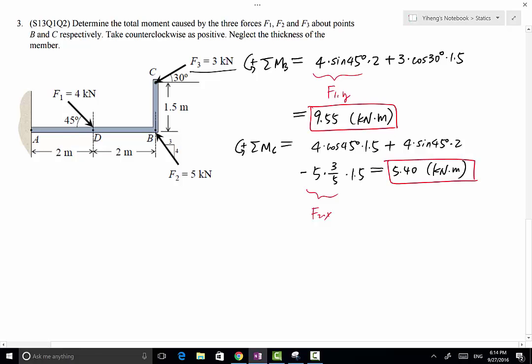So now we have applied the principle of moments to solve this problem by resolving the forces into convenient components. Convenient meaning that their moment arms to the point of reference are easier to determine. Then we can determine the resultant moment by summing the moment caused by those component forces about the reference point.